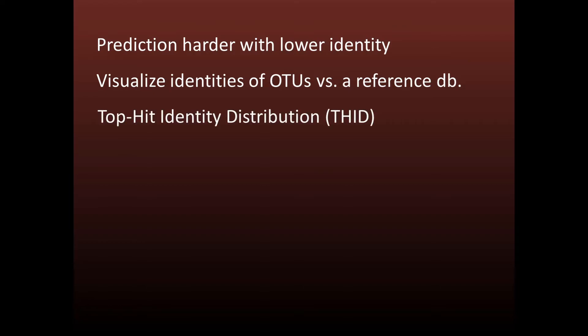So as we expected, prediction gets harder with lower identities. To understand the accuracy we're likely to get on a given dataset, we need to know how the identities of the OTUs look compared with the reference sequence. This can be visualized as a top hit identity distribution.